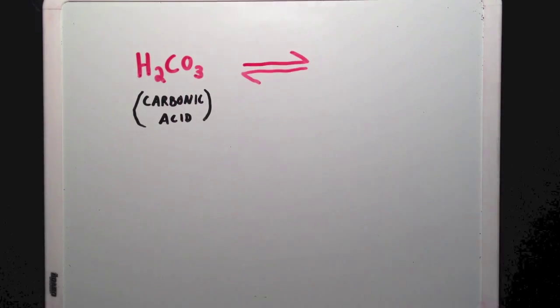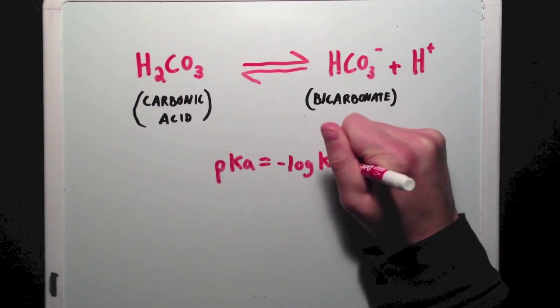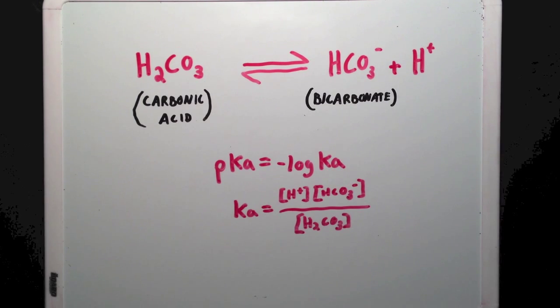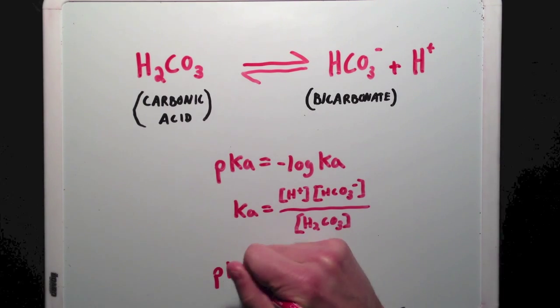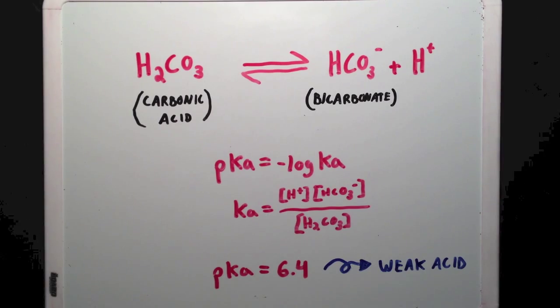Remember that if we dissolve a weak acid, like carbonic acid, into solution, it will be in equilibrium with its conjugate base bicarbonate. The amount of carbonic acid that will actually dissolve is represented by the acid's pKa, which is equal to the negative log of the Ka, or acid dissociation constant. Carbonic acid's pKa is 6.4, making it a weak acid since the pKa is close to 7.